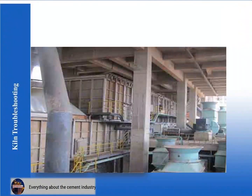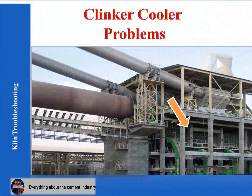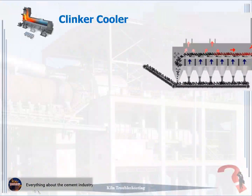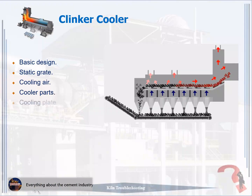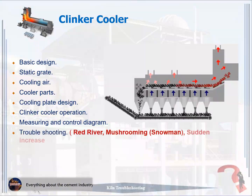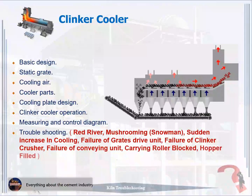In this topic, some data about the clinker cooler and clinker cooler problems will be explained. Topics covered include: basic design, static grate, cooling air, cooler parts, cooling plate design, clinker cooler operation, measuring and control diagram, and troubleshooting — including red river, mushrooming, snowman, sudden increase in cooling, failure of grates drive unit, failure of clinker crusher, failure of conveying unit, carrying roller blocked, and hopper filled.